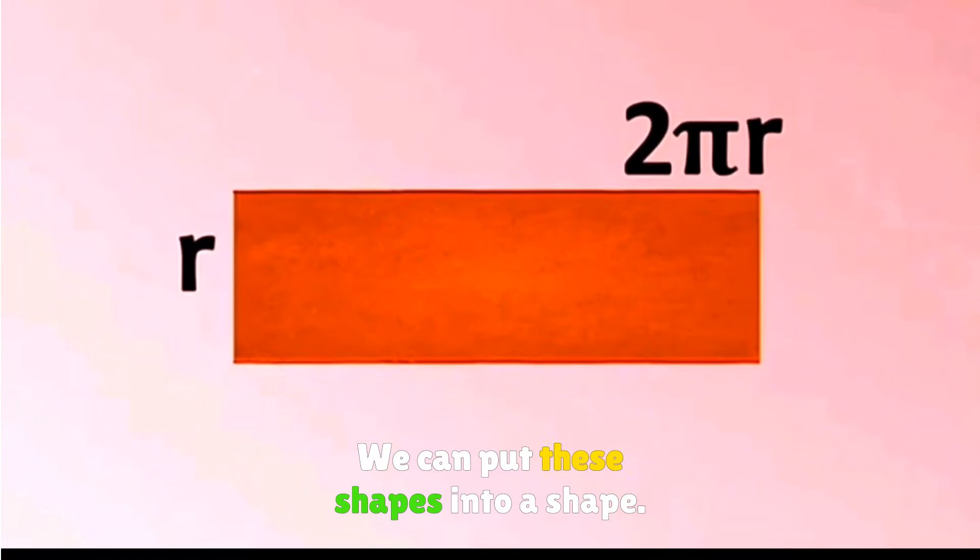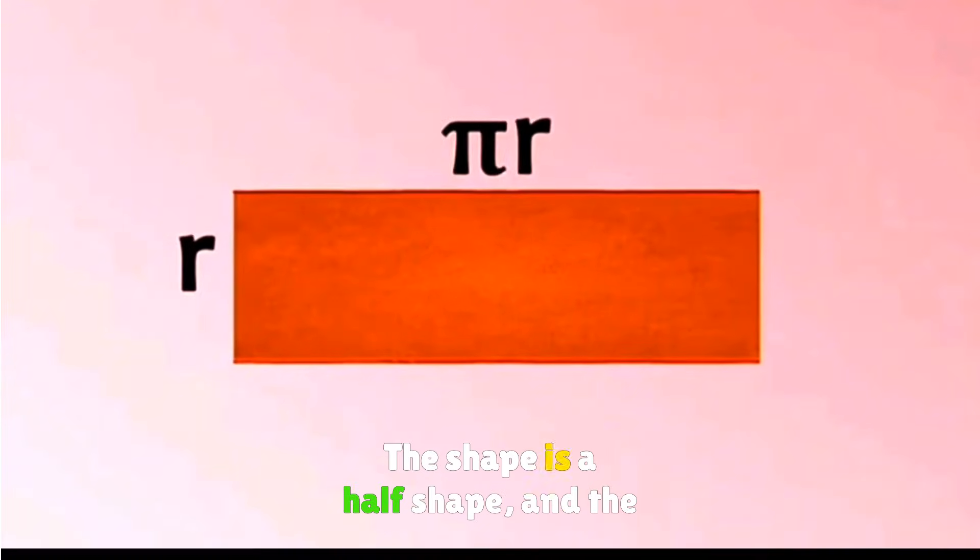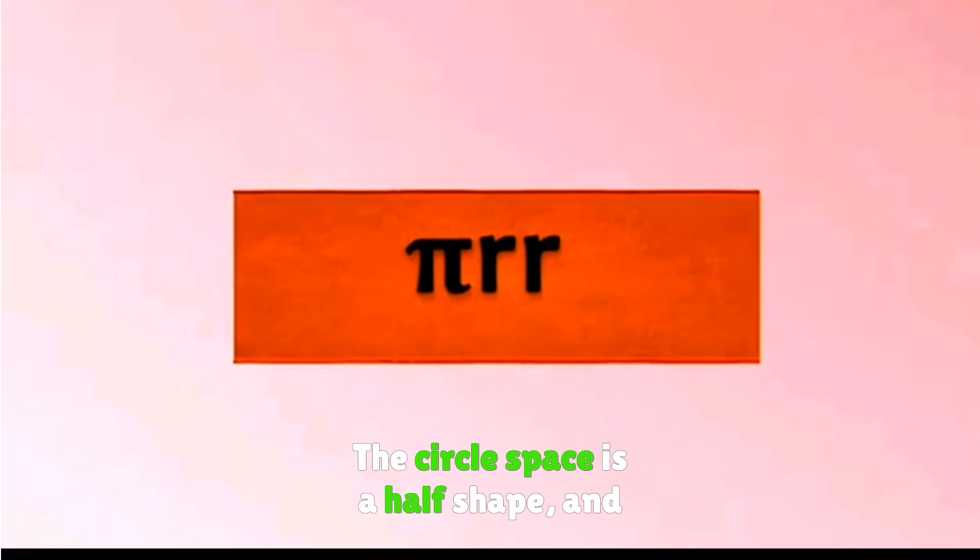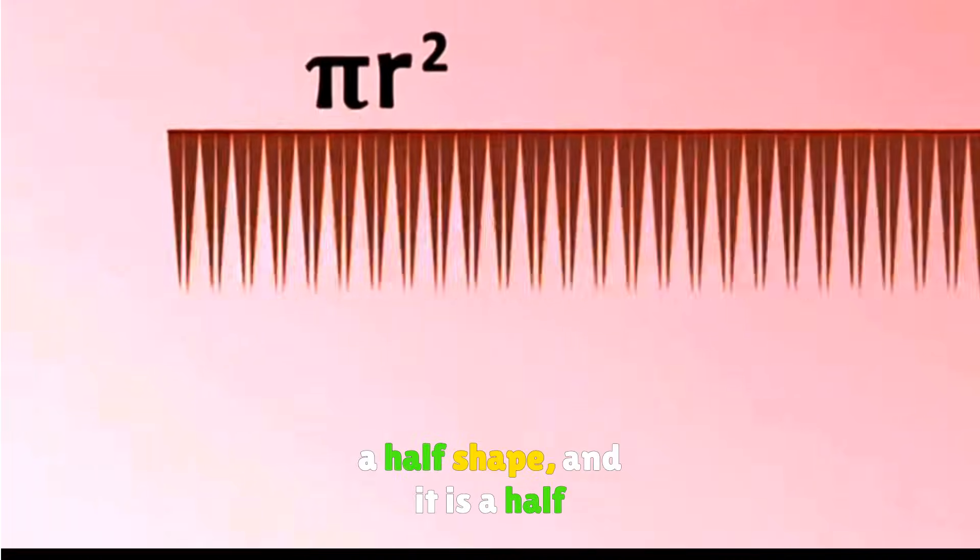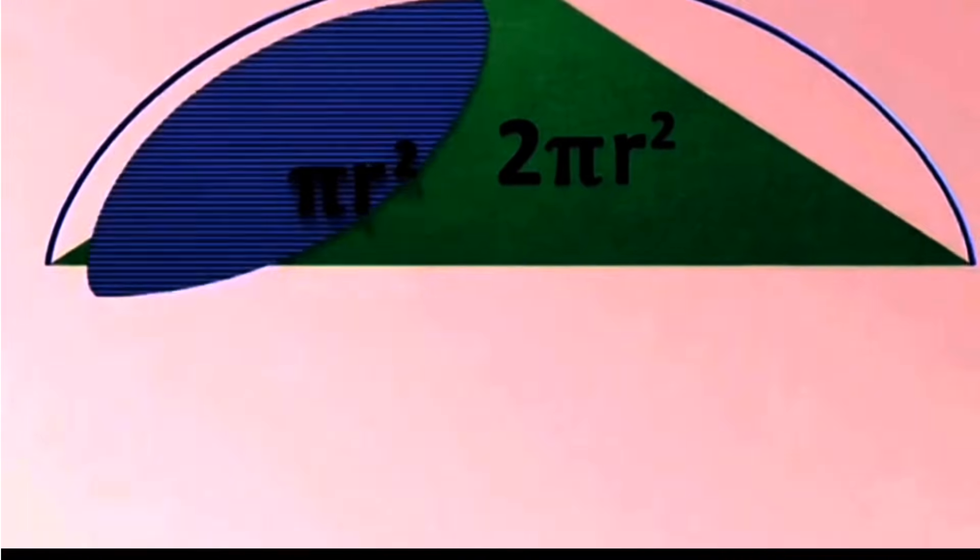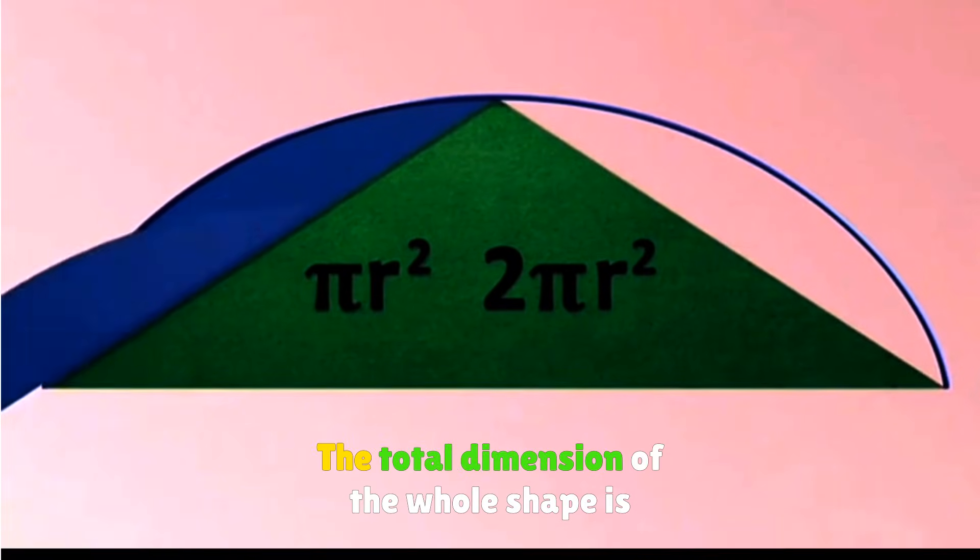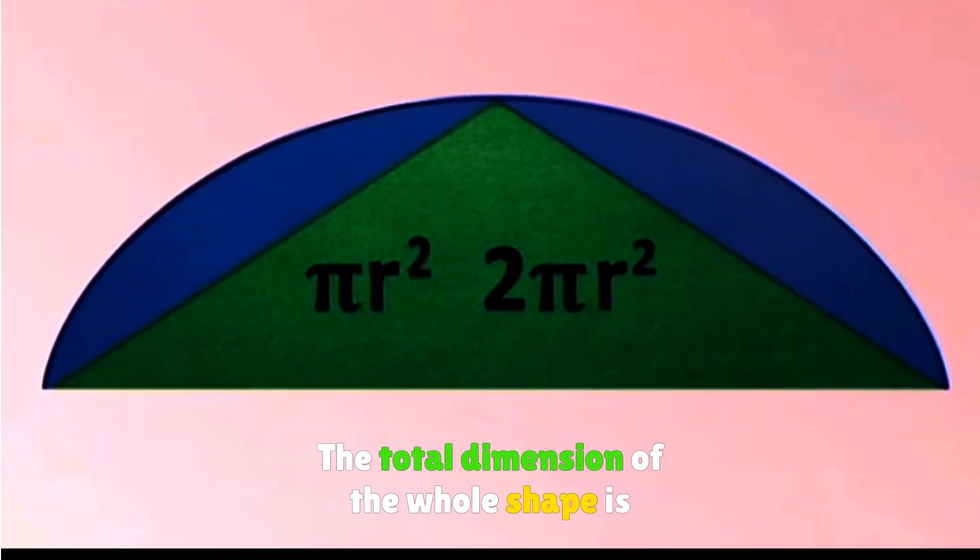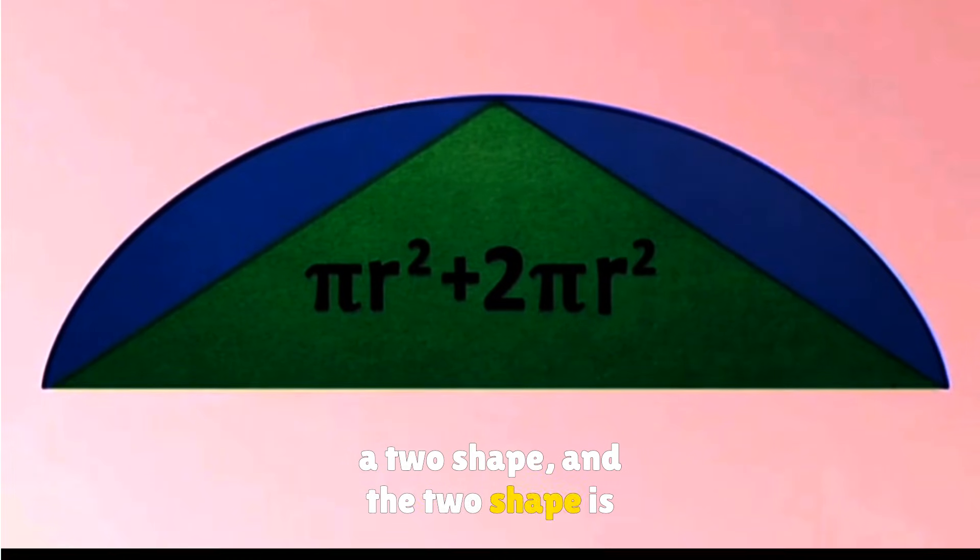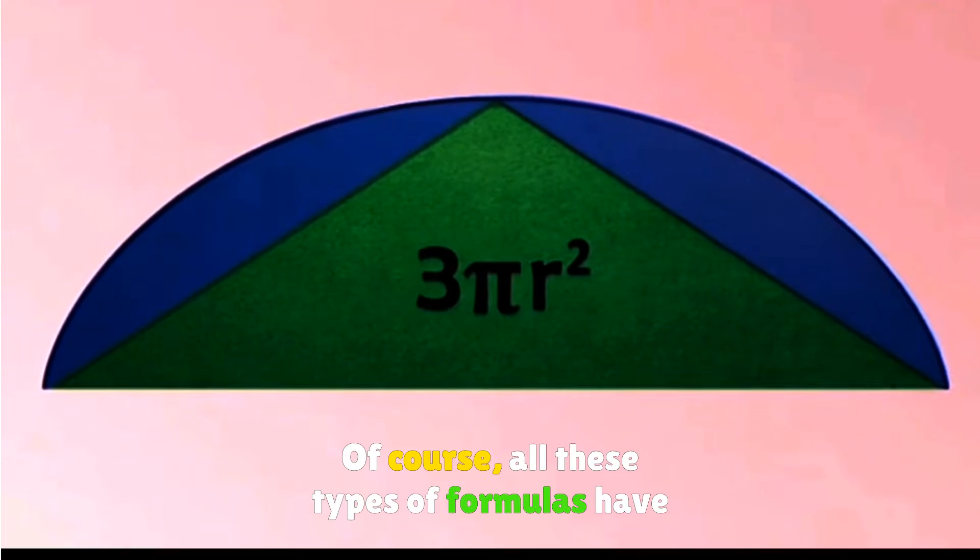We can put these shapes into a rectangle. The circle area is πr². The total is 3πr². The total dimension of the whole cycloid is 3πr².